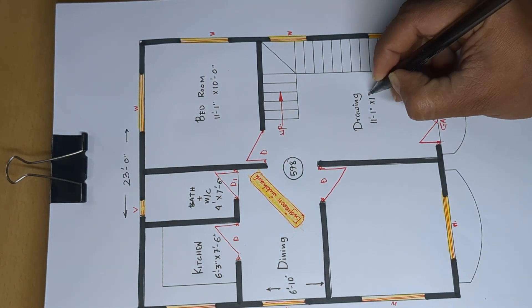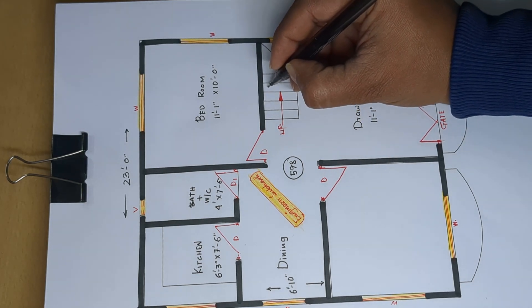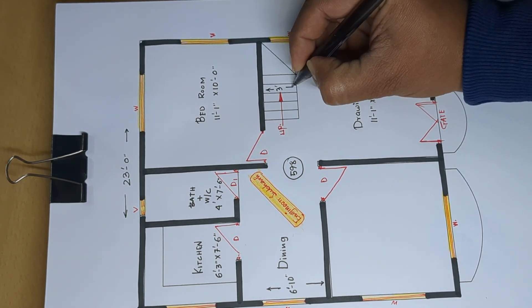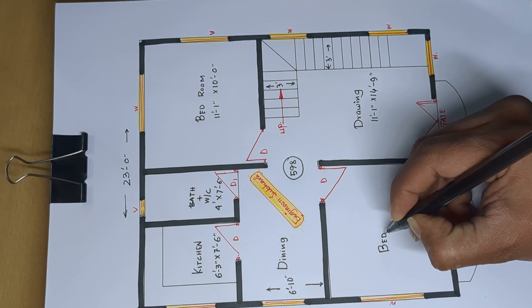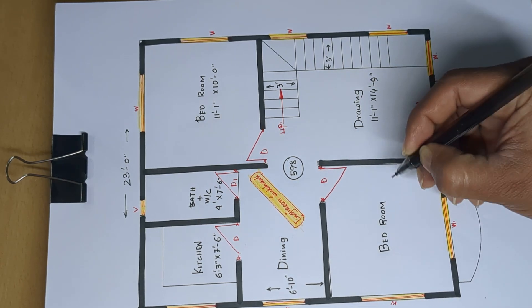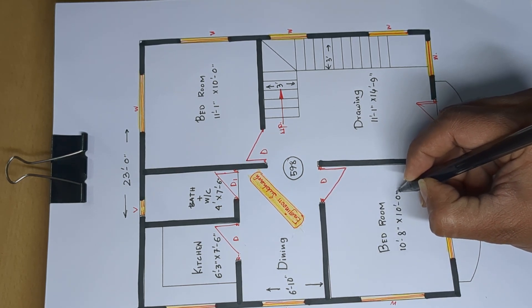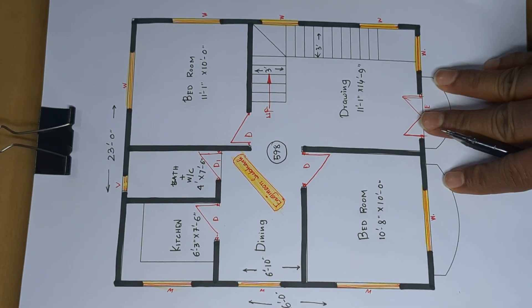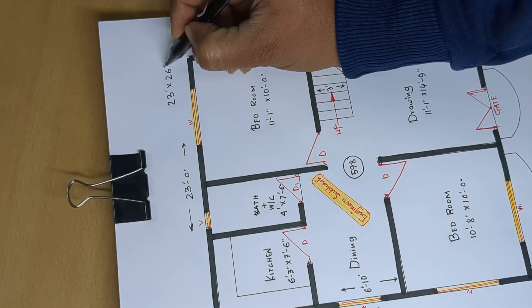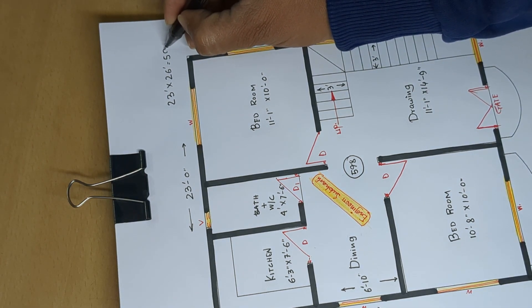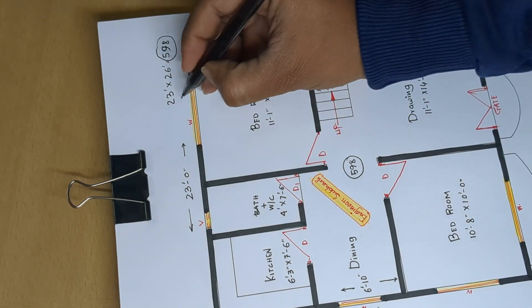Eleven feet one inch and fourteen feet nine inch, length into bed scale. Three feet and three feet wide. Next bedroom, ten feet eight inch and ten feet zero inch. Plus covered twenty three feet and twenty six feet, five hundred ninety eight square feet house plan design cost.